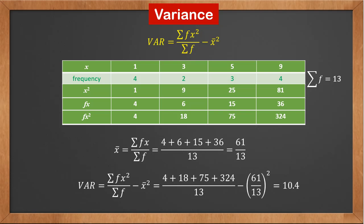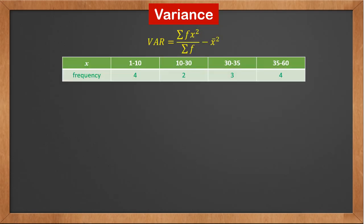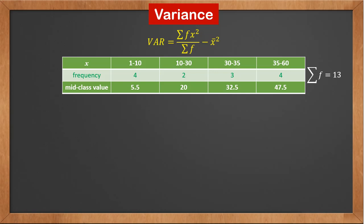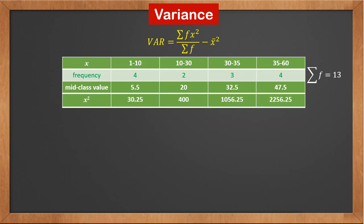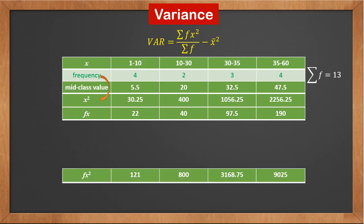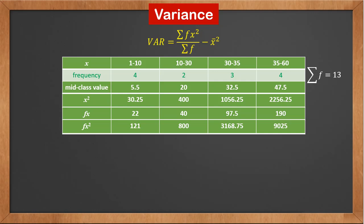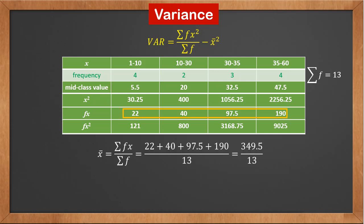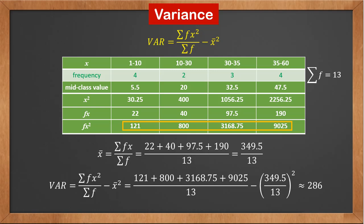Remember to keep the exact value of x-bar to avoid loss of precision. For grouped classes, we use the same formula with the mid-class value. First, calculate sigma f and add a row of mid-class values. Then add a row of x squared — squaring the mid-class values: they are 30.25, 400, 1056.25, and 2256.25. Then multiply frequency by mid-class value, and finally multiply frequency by the square of mid-class value. To calculate the mean, sum all values in the f times x row and divide by sigma f, which is 13. To calculate the variance, sum all values in the f times x squared row, divide by 13, and subtract the square of the mean. The result is approximately 286.